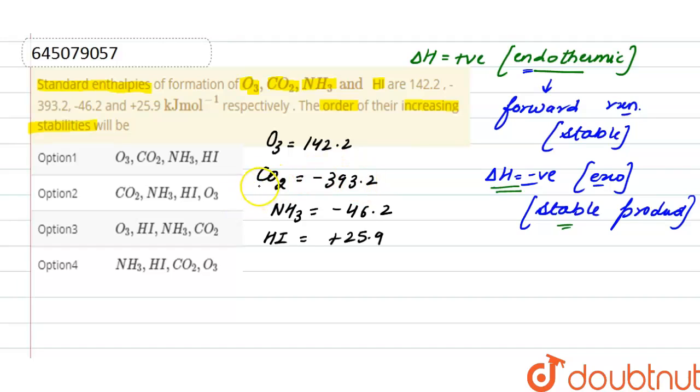So here as we can see that the standard enthalpy of formation of CO2 is very negative, so most stable product is CO2. Next is NH3. And here for ozone and HI, the values are in positive and less positive value is of HI and then ozone.